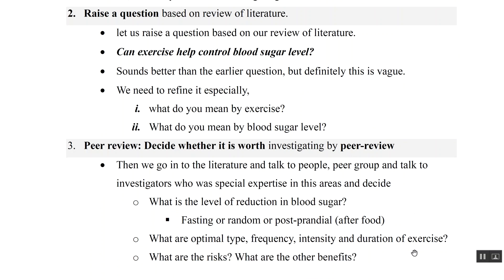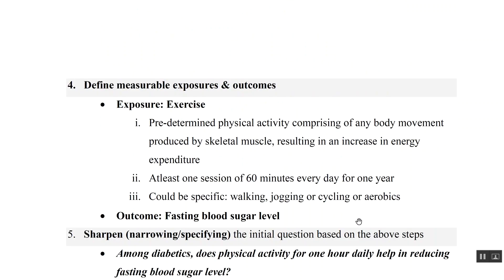Through peer review with specialized experts, we consider: what level of blood sugar reduction is relevant, whether to measure fasting blood sugar, random blood sugar, or PPBS, and what the optimal time, frequency, intensity, and duration of exercise should be, along with risks and benefits. After peer consultation, we conclude it is worth investigating. We define our exposure as exercise — a predetermined physical activity involving body movement that results in increased energy expenditure.